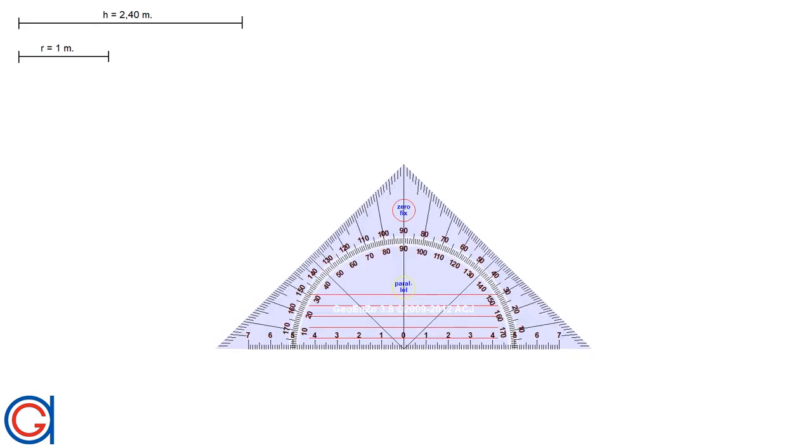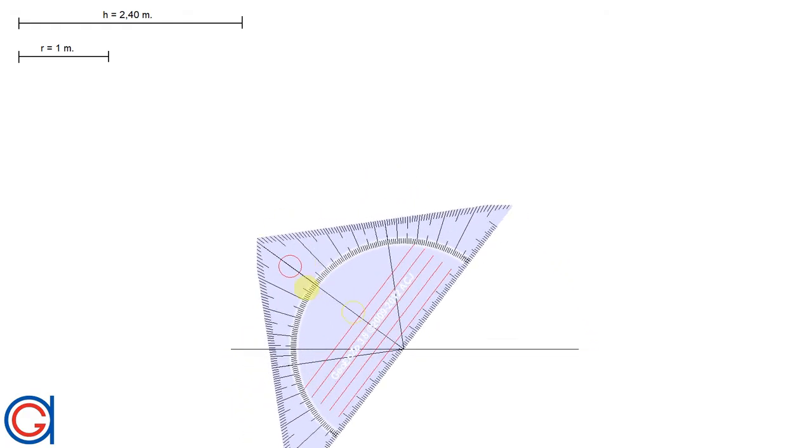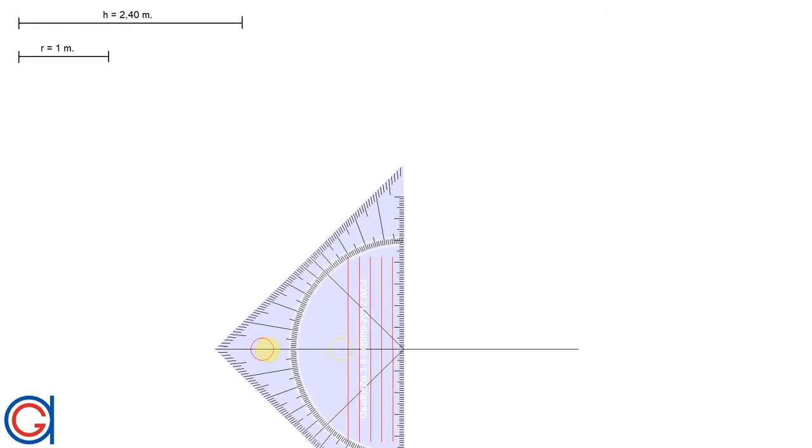So the first step is to draw a horizontal line on the bottom of the page, on the bottom of the screen as can be seen here. Now we are going to draw a perpendicular vertical line to this line.